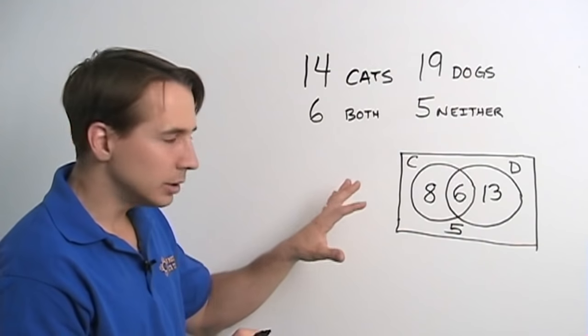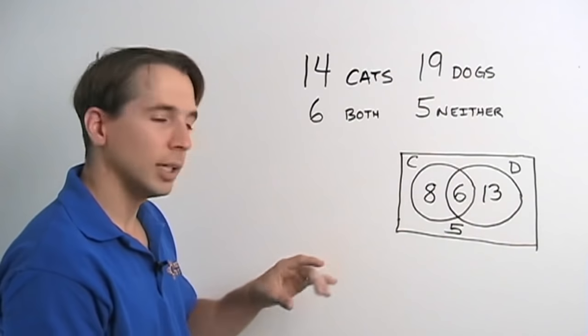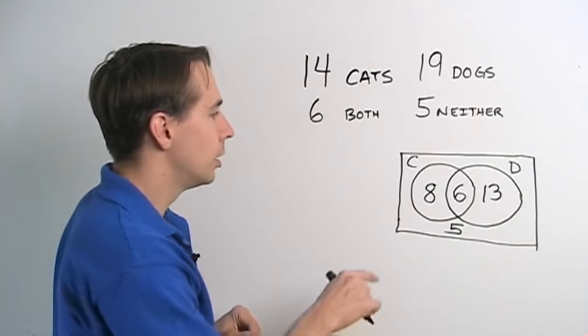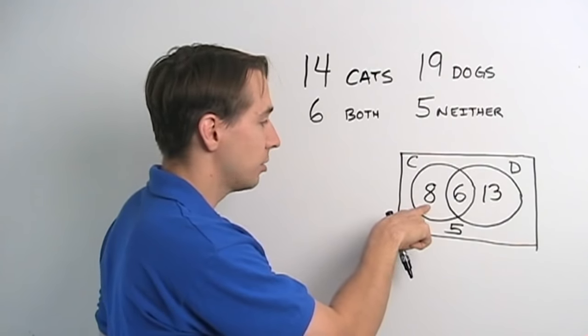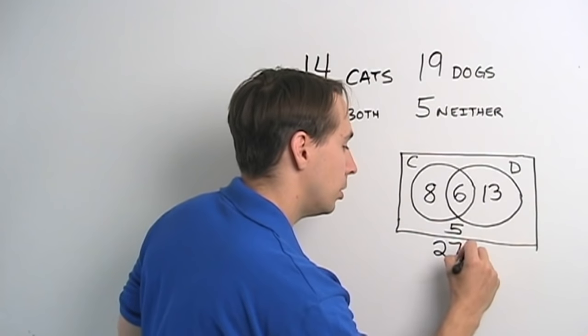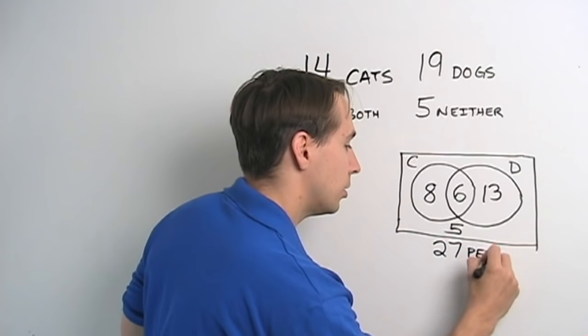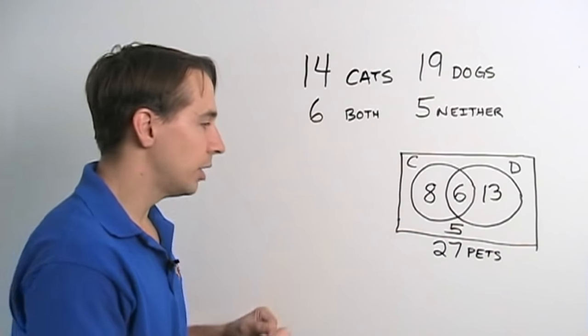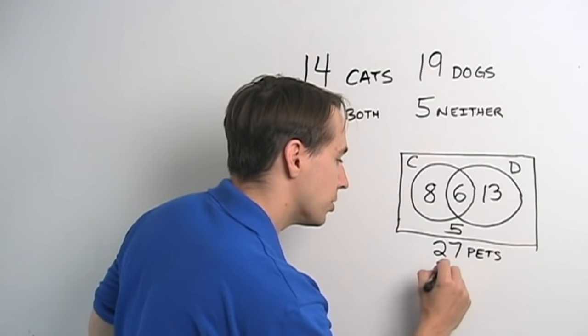So now every house on my street is in this box, and they're all counted exactly once. So now I can figure out how many have pets. 8 plus 6 plus 13, that gives me 27 houses with pets. And then I tack on the 5 that don't have any pets at all, and that gives me a total of 32 houses.